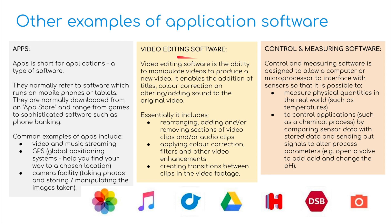We then move on to video editing software, which gives us the ability to manipulate video to produce a new video. Lots of these are used nowadays with social media sites such as TikTok and Instagram. Finally, control and measuring software is designed to allow computers or microprocessors to interface with sensors so that it's possible to measure physical qualities in the real world, such as temperatures, and to control applications such as chemical processes by comparing sensor data and stored data and sending out signals to alter process parameters — even things such as burglar alarms will use some kind of monitoring and measuring software, maybe within a microcontroller.